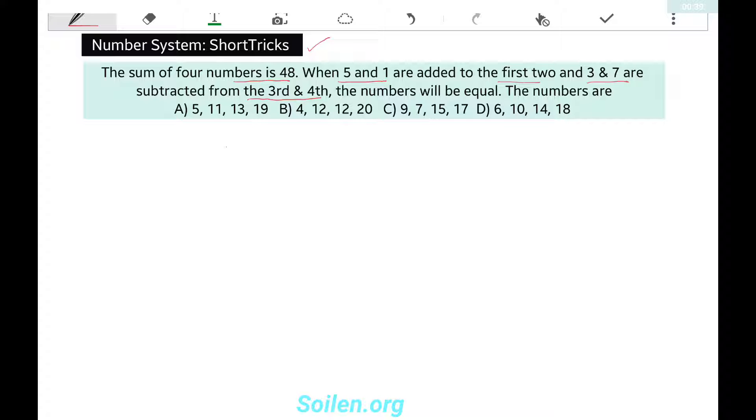This question can be solved with options very easily. Given the sum of four numbers is 48, so first you can check if the sum is 48 or not. 5, 11, 13, and 19—sum is 48.